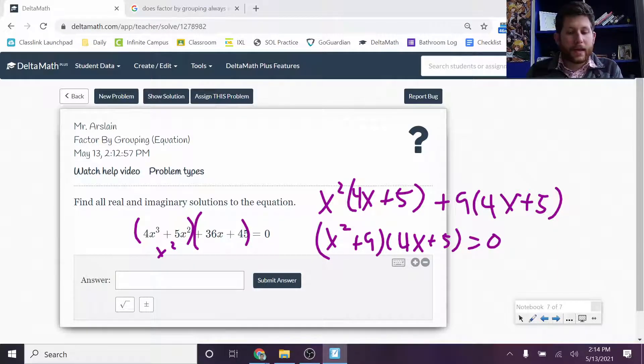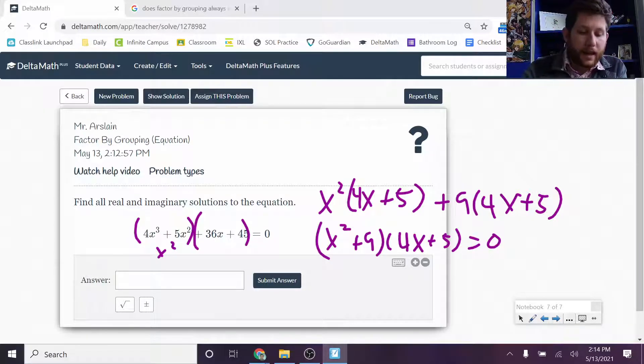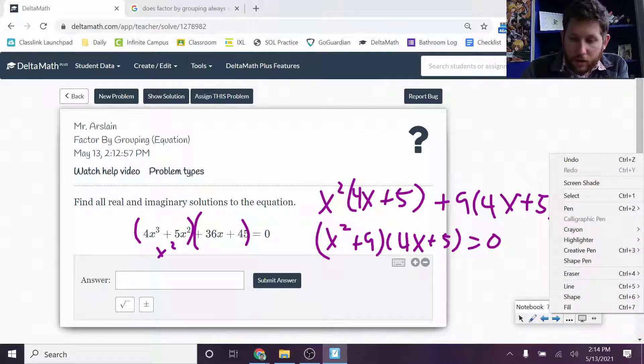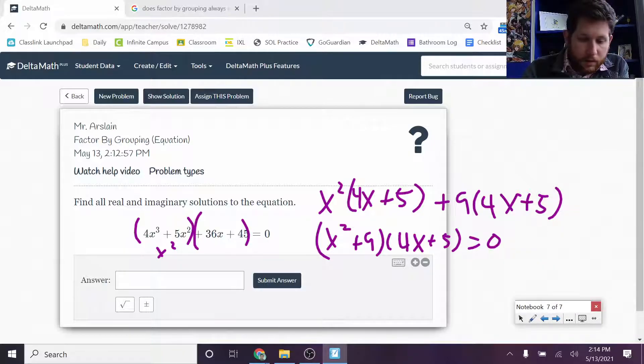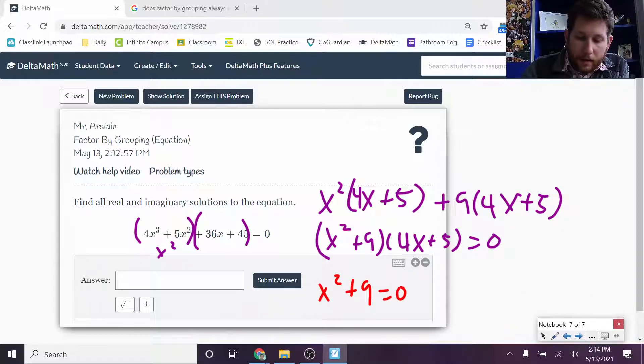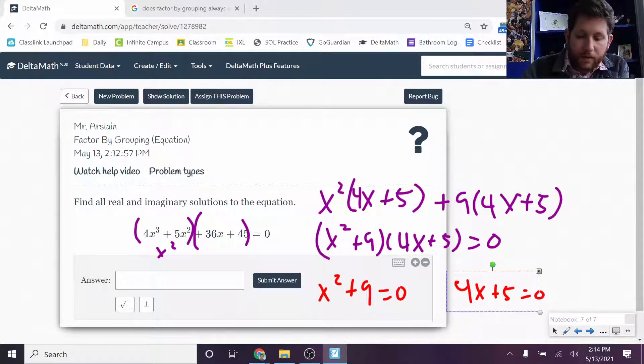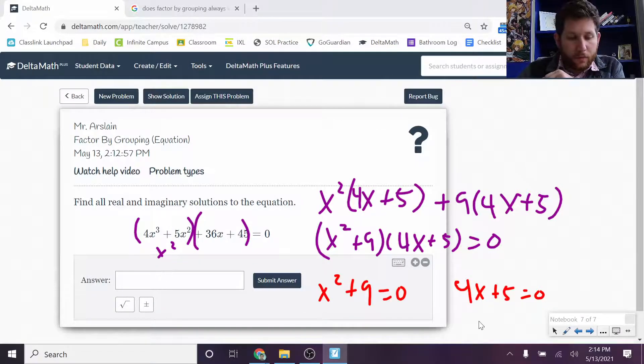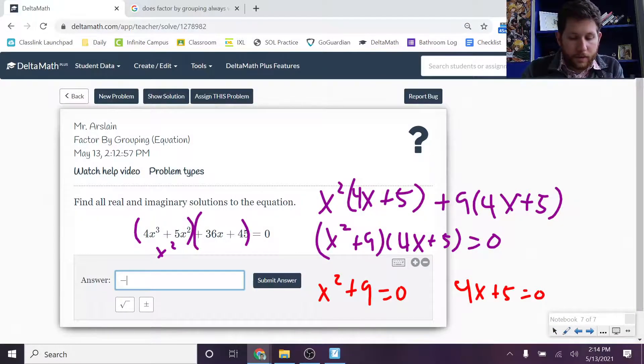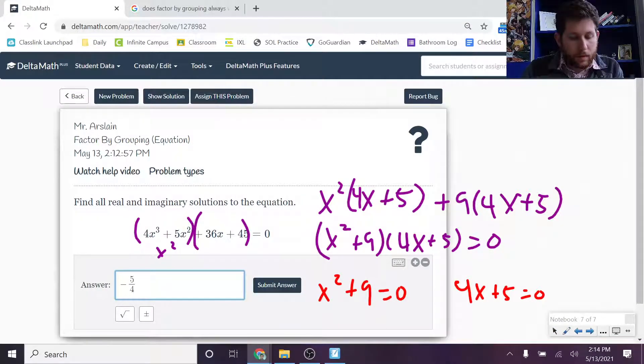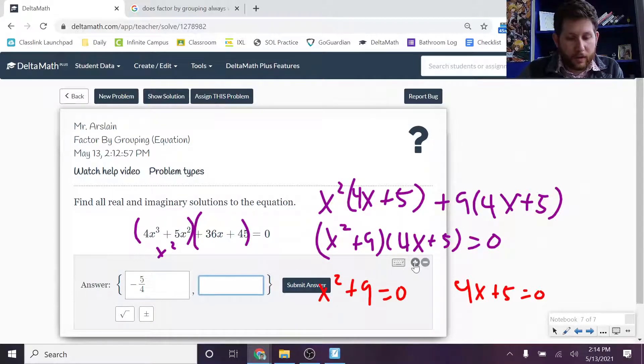So now that I have it equal to 0, I still need to do what we've done in the past. I need to solve this. So I'm going to set the x squared plus 9 equal to 0. Let me change colors. So I've got x squared plus 9 is equal to 0, and I get 4x plus 5 is equal to 0. So the 4x plus 5 equal to 0, I subtract 5, divide by 4. So that should get me negative 5 fourths. And put a comma in between, or you can hit this plus sign to add more solutions. So there's one.